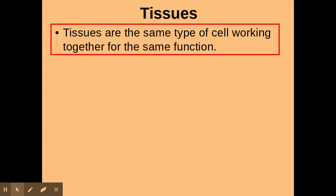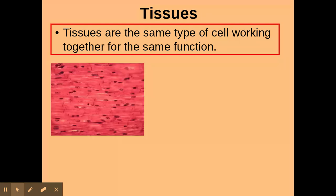So cells — obviously we know what a cell is, we do the cell ultrastructure. These are grouped together in tissues, and tissues are the same type of cell working together for the same function. That definition is taken directly from the mark scheme, so we definitely need to be aware of it. For example, muscle cells grouped together make up muscle tissue, all working together for the same function, which is contraction.